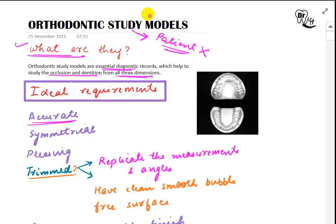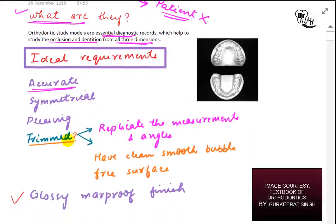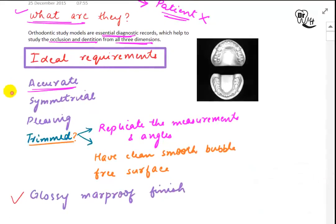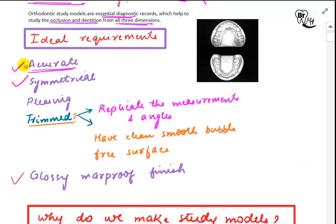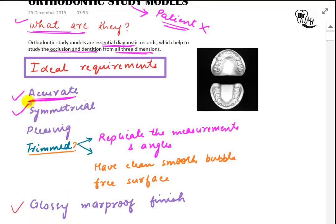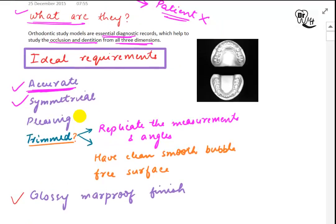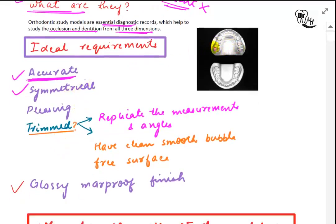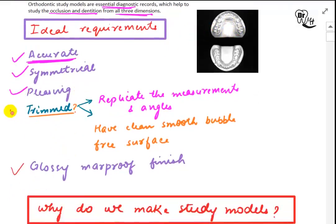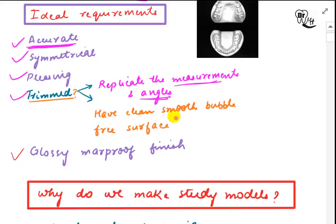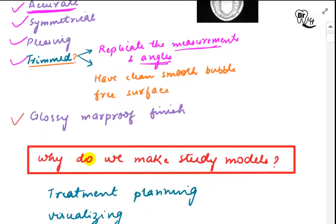These study models have certain ideal requirements. First of all, they should be accurate — accurate enough to reproduce the exact replica of the teeth and surrounding structures. Second, they should be symmetrical, meaning they should be pleasing to the eye with equal dimensions from all sides, and trimmed to replicate the correct measurements and angles. They should have a clean, smooth, bubble-free surface and a glossy, mar-proof finish.